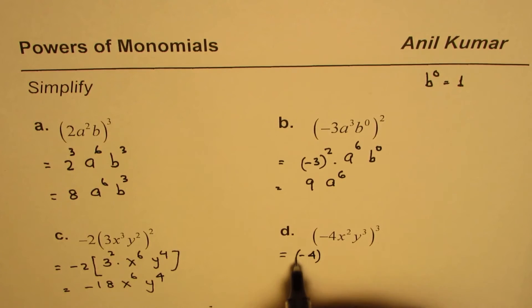In this case, we have (-4)³, x² times 3 is x⁶, y³ times 3 is y⁹. 4³ is 64, and the negative cubed is always negative, so it is -64x⁶y⁹. That is how you can simplify them.